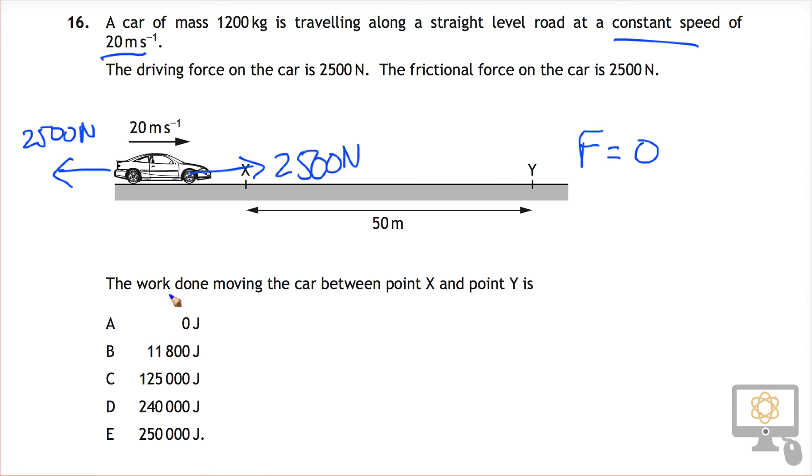So let's have a look at the question. It says the work done moving the car between X and Y is one of these things. If we think about the equation, we know the equation for work done, EW is force times distance or force times displacement sometimes, and the distance is 50 meters. That's good. What's the force?